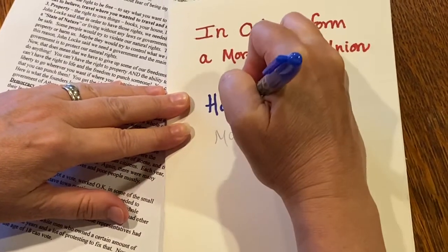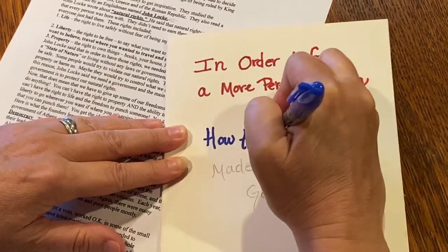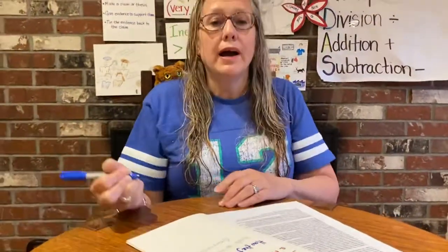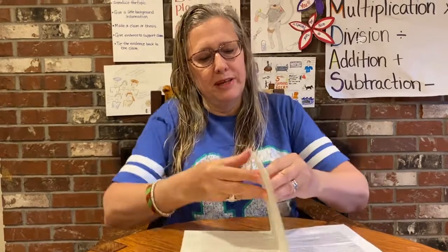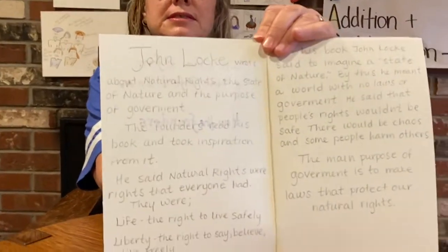Welcome back. I was just working on the cover of my book, and today we are going to work on the first section, which is all about John Locke and his ideas about why we need government. Here's what it looks sort of like by the time you're done — something like that.